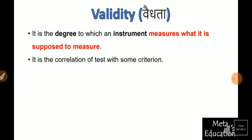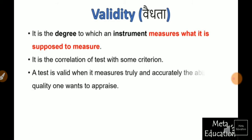Validity is the correlation of a test with some criteria. We need some external criteria for validity. If we want to know the validity of any tool, there are more types. A test is valid when it measures truly and accurately the ability or quality one wants to appraise. If we want to know the ability or the quality, then we can know the right thing, and then we say that our test is valid.